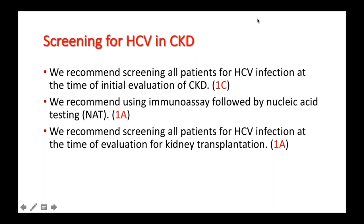We start with screening for hepatitis C virus in chronic kidney disease. The guideline group makes a grade 1C strong recommendation for screening of all patients for HCV at the time of initial evaluation of CKD. The second recommendation is to use immunoassay first, followed by nucleic acid testing. If the immunoassay shows positive hepatitis C antibody, you then perform nucleic acid testing to determine the genotype.